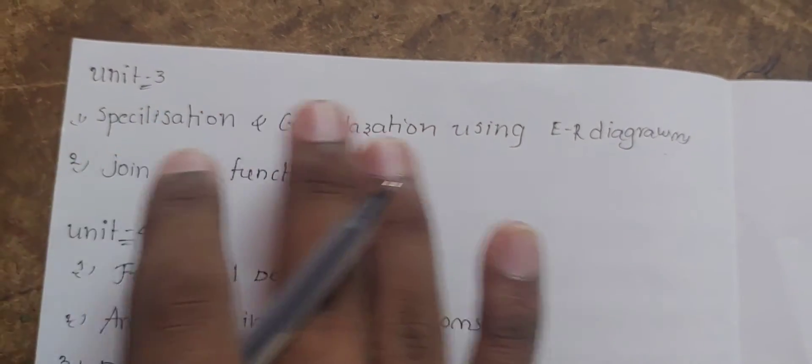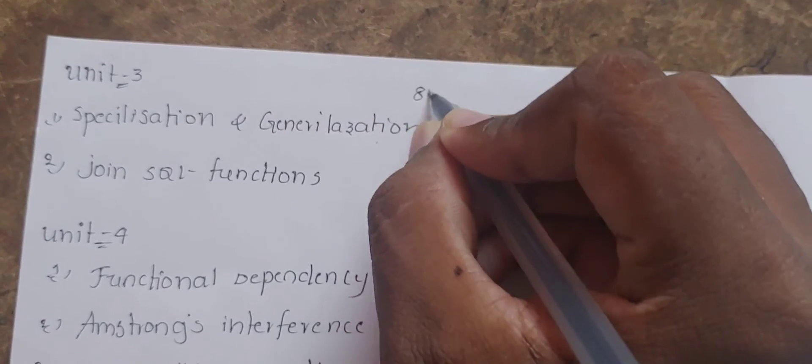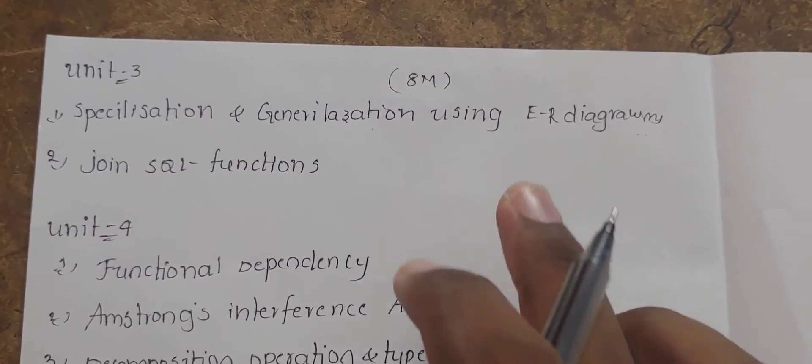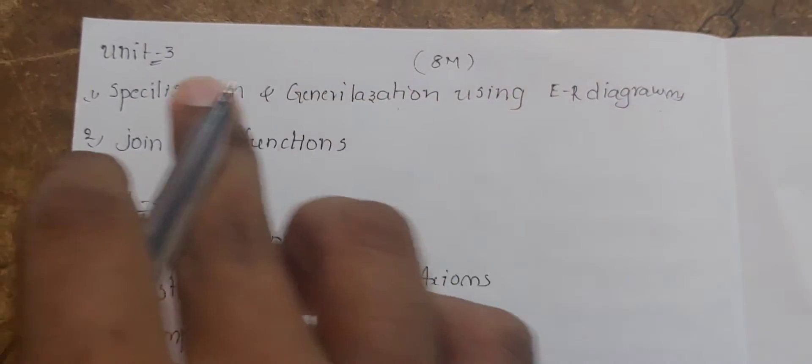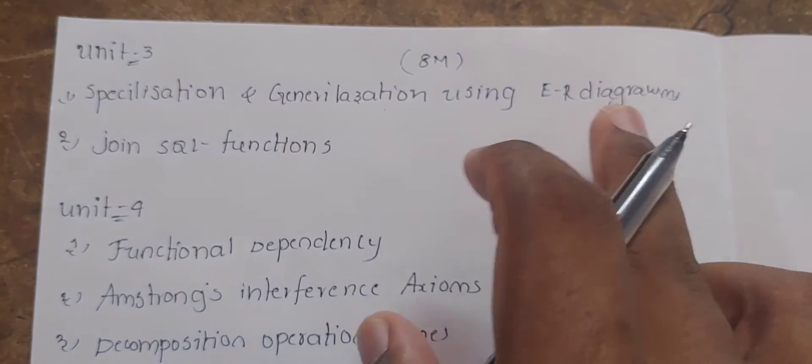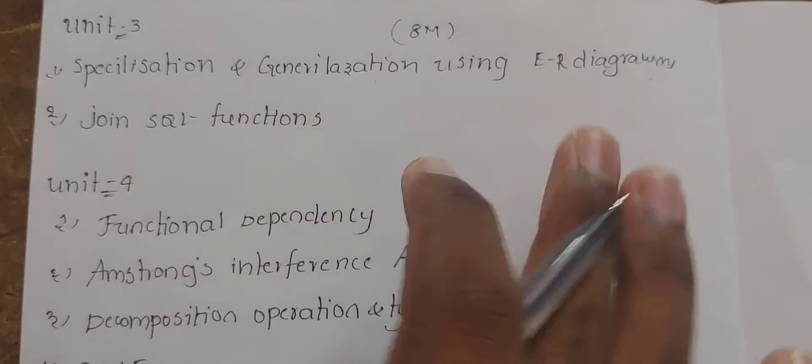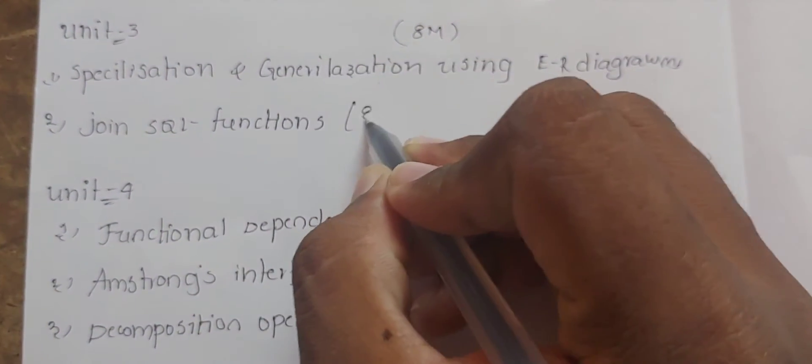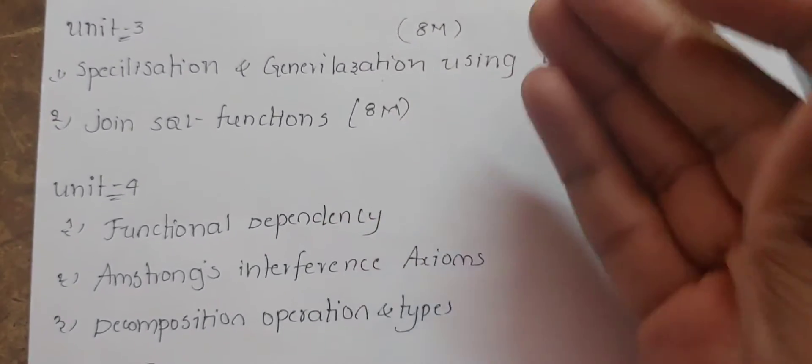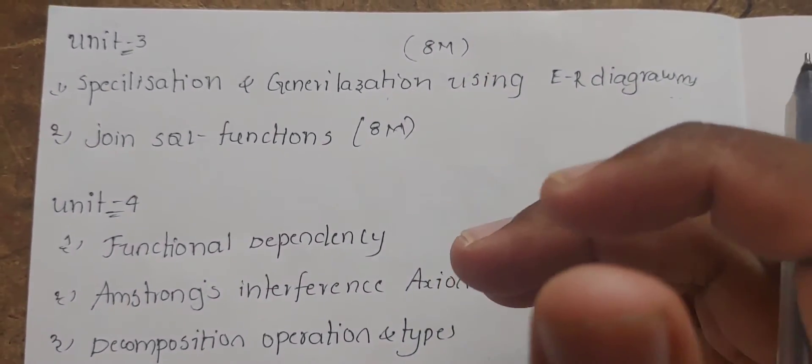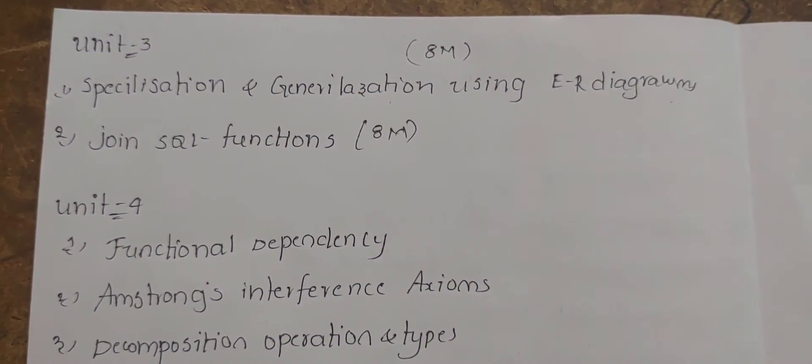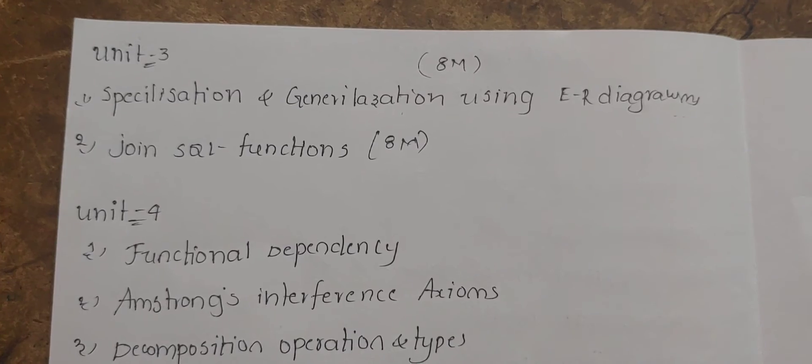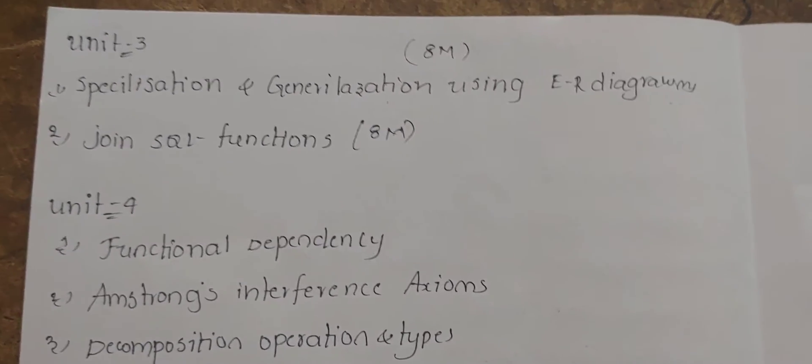The ER diagram is important. The ER diagram is a combo. Join SQL functions - this is for eight marks. SQL functions - explain the particular functions. Specialization and generalization to mark it on the screen.